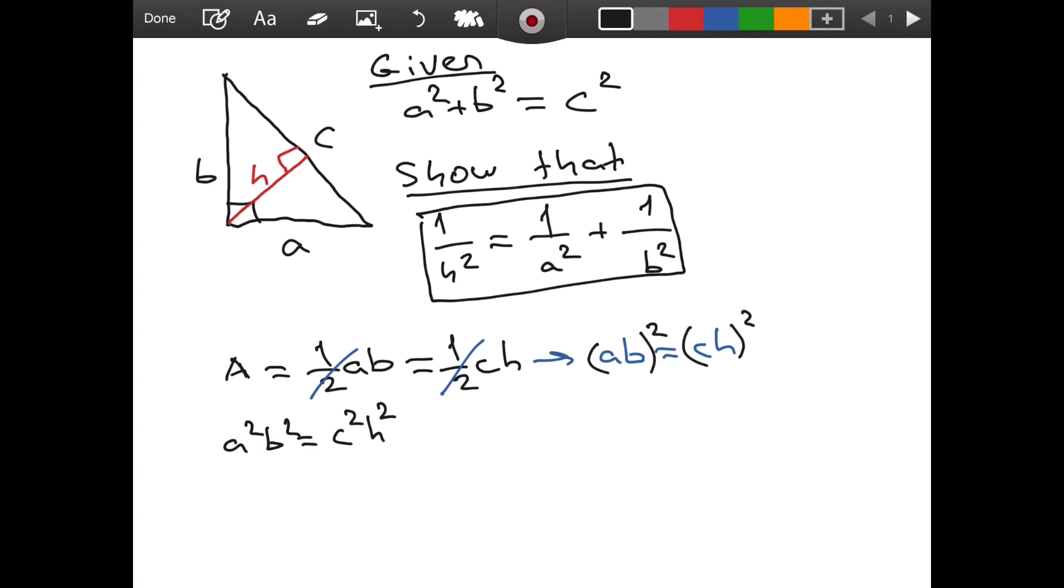Okay. Now, as you can see, in the inverse Pythagorean theorem, in this equation, we don't have C. So, it is obvious that we will substitute for C. So, instead of C squared, I will be writing A squared plus B squared from the Pythagorean theorem. So, this is why we took this as a given. This is where this comes handy.